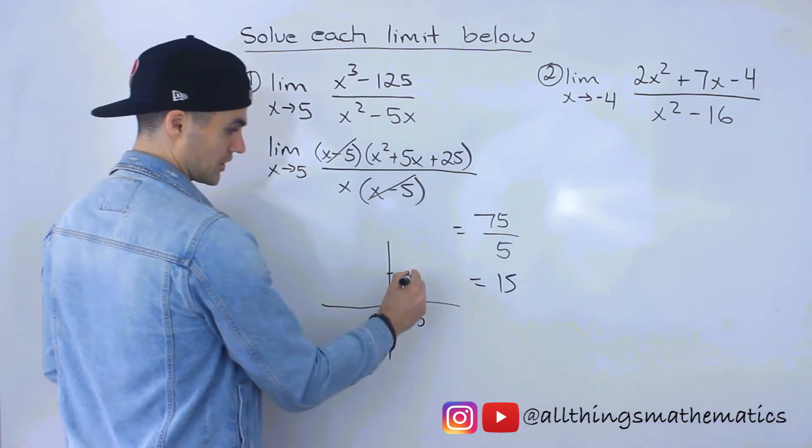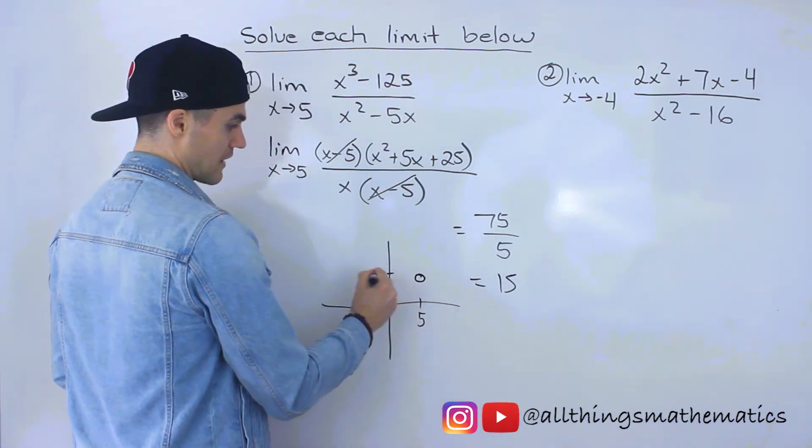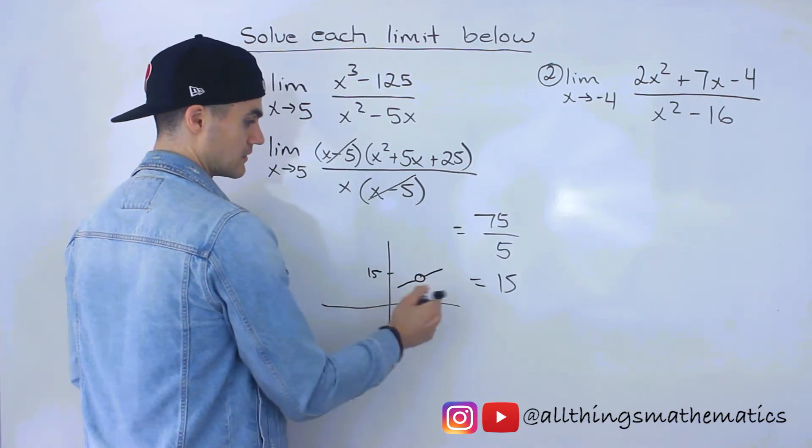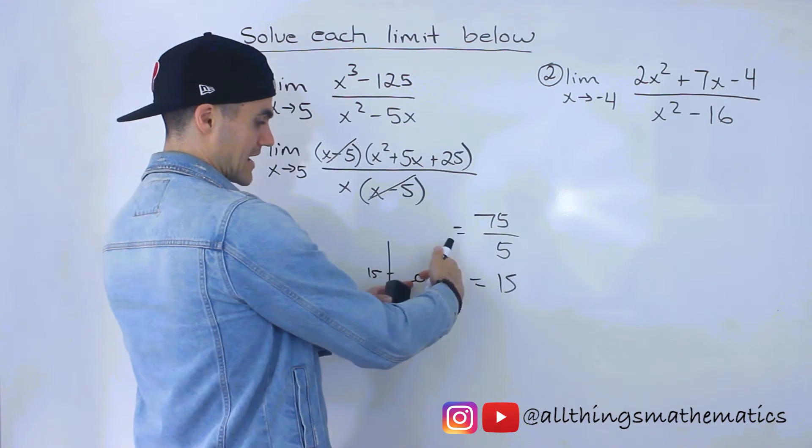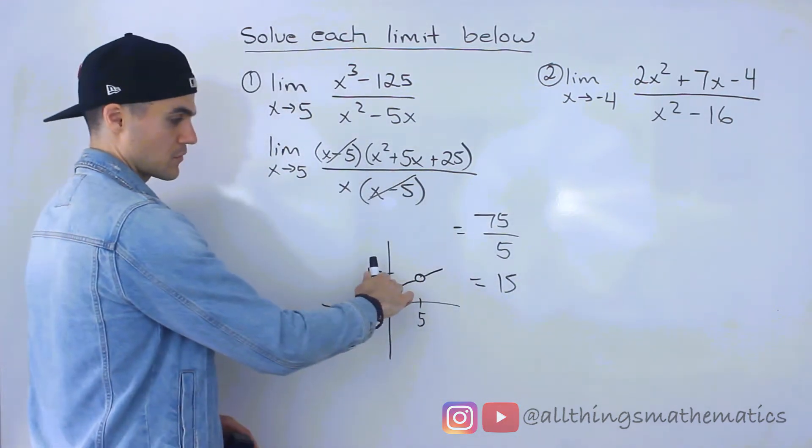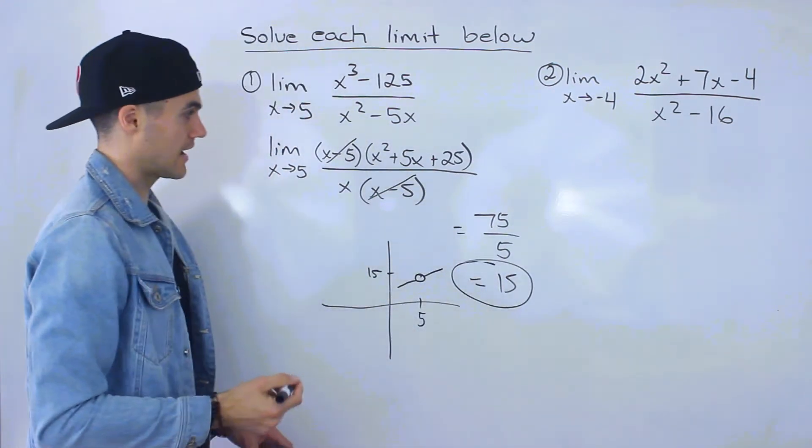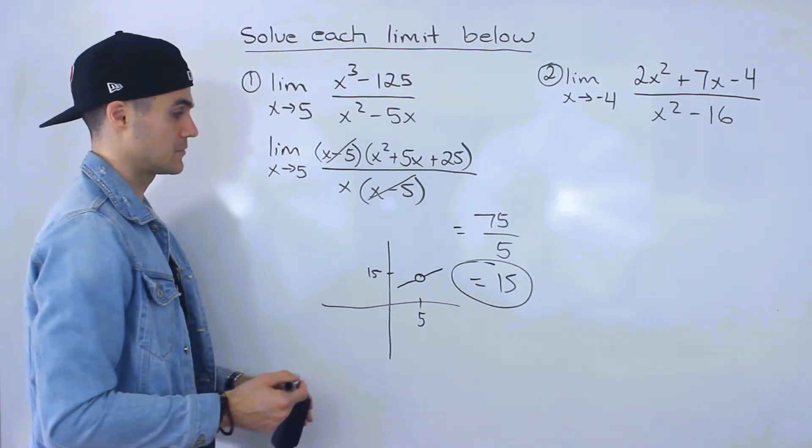And so this function here has a hole at an x value of 5. And then the y value at that hole is 15. So let's say the function maybe looks like that. Well, the limit as x approaches 5, notice from both sides, the y values are approaching 15. And so that is the answer to this limit here.